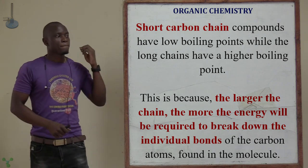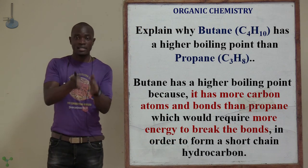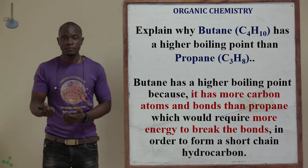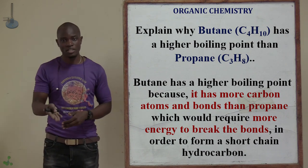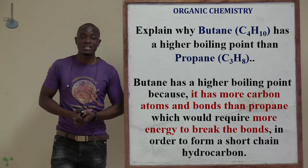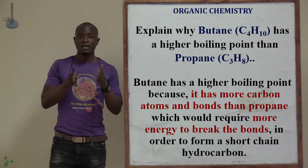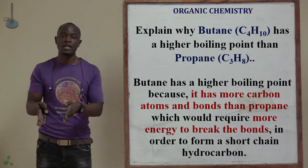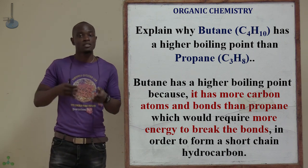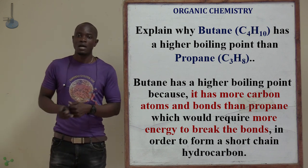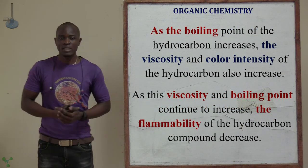In an exam, you might be asked: 'Explain why butane has a higher boiling point than propane.' The answer is simple — butane has more carbon atoms and more covalent bonds compared to propane, which has fewer carbon atoms and fewer bonds. Therefore butane has a higher boiling point. Just mention that it has more carbon atoms and more bonds, and your answer will be correct.